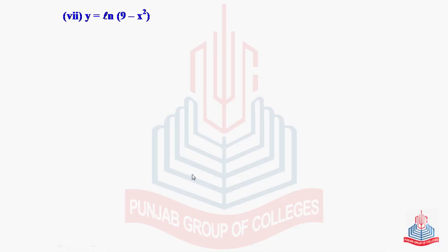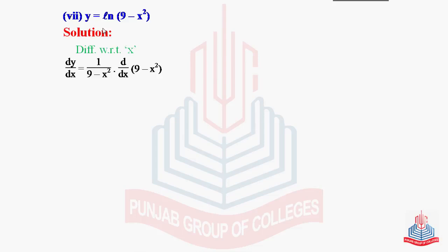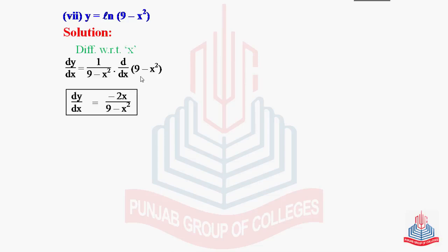Part 7: y = log(9 - x²). Differentiate with respect to x. Using the log differentiation formula, dy/dx = 1/(9 - x²) times the derivative of (9 - x²). The derivative of the constant 9 is 0, so the result is -2x/(9 - x²).